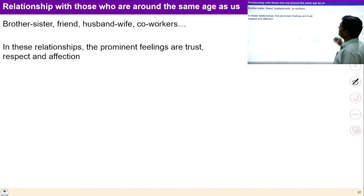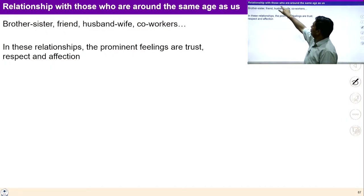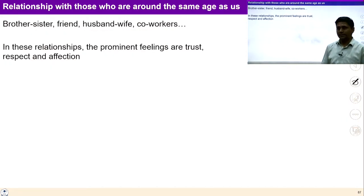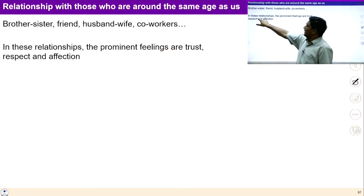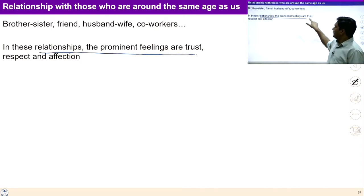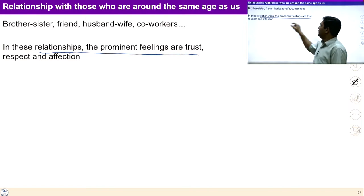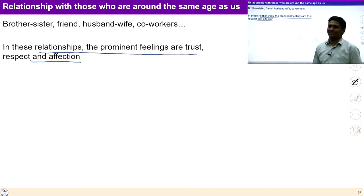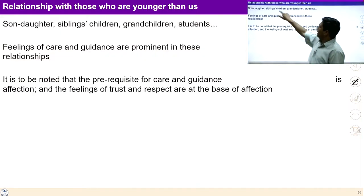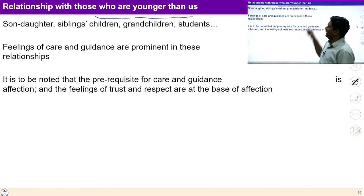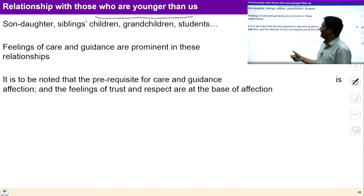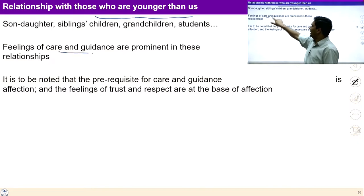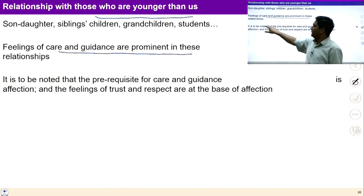It also becomes clear that if we develop the right understanding and live in a right manner with definite conduct, then those who are younger than us will develop feelings of gratitude, glory, and reverence for us. In relationships with those around the same age, the prominent feelings would be trust, respect, and affection. With those younger than us, feelings of care and guidance are prominent.